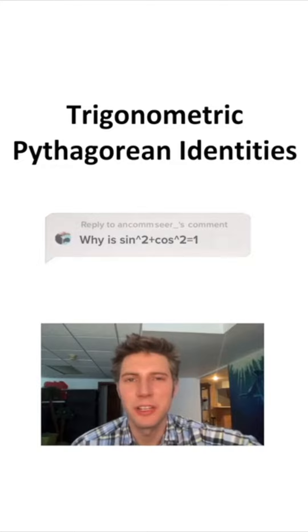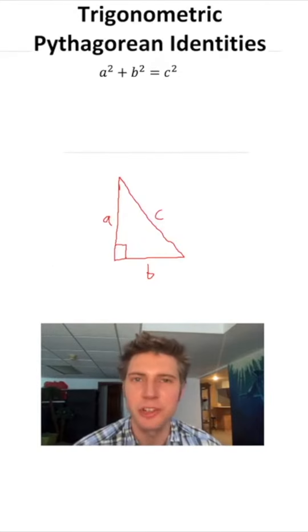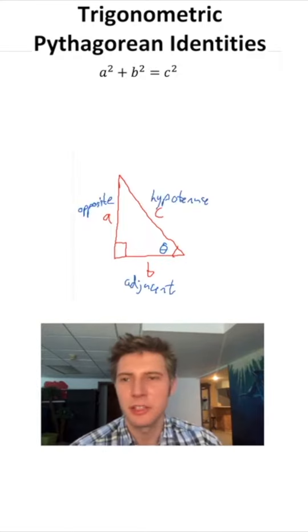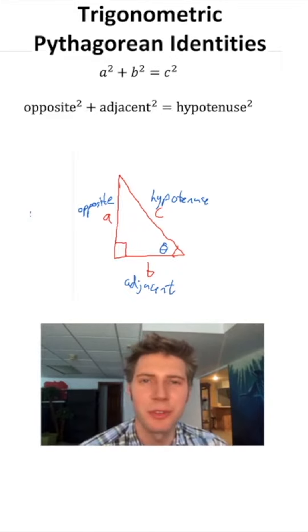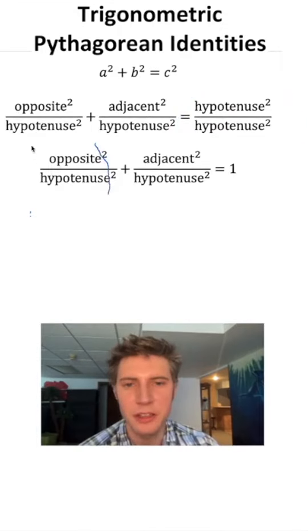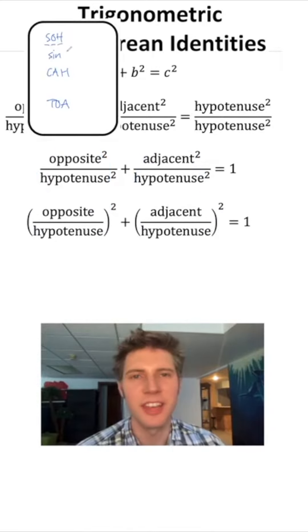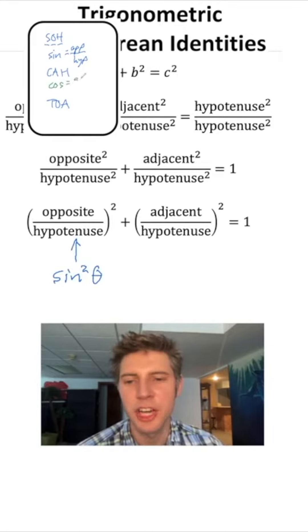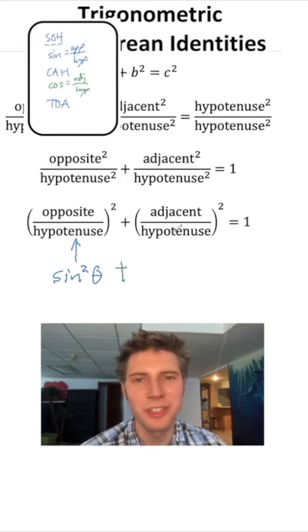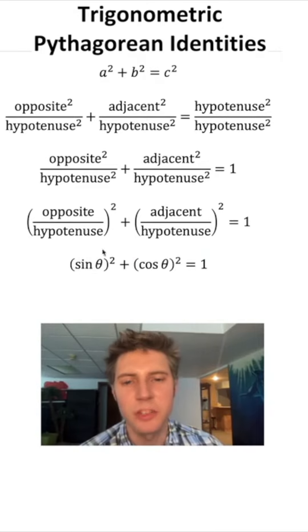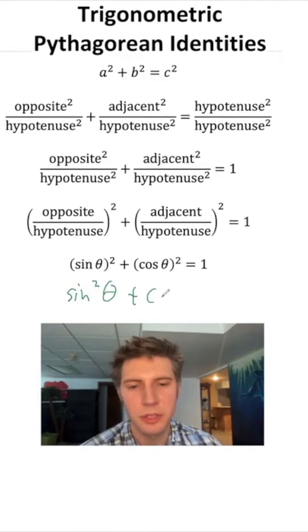Why is sine squared plus cosine squared equal to 1? The Pythagorean theorem says in a right triangle, a squared plus b squared equals c squared. If we call the angle theta, then a is the opposite, b is the adjacent, and c is the hypotenuse. We can update our formula: opposite squared plus adjacent squared equals hypotenuse squared. Dividing everything by hypotenuse squared: the right side becomes 1, and we can take the squared outside each fraction. By SOHCAHTOA, sine is opposite over hypotenuse and cosine is adjacent over hypotenuse. So we get sine squared theta plus cosine squared theta equals 1. We typically write it this way so it's clear it's the sine being squared, not the theta.